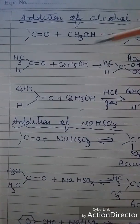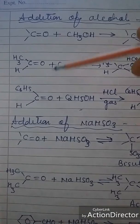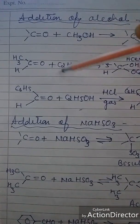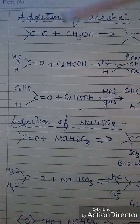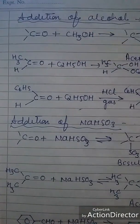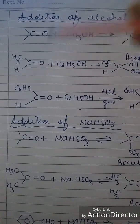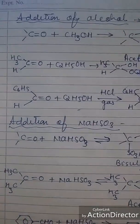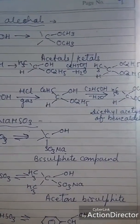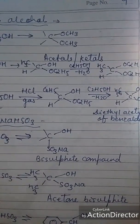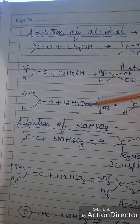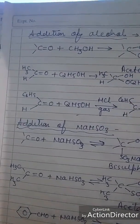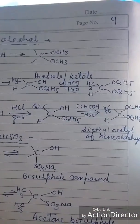Let us see the addition of alcohol. When alcohol is added to acetone, the OC2H5 group attaches to the carbon and H attaches to oxygen, giving a hemiketal. Further treatment gives the diethyl ketal derivative. Similarly, when benzaldehyde is treated with ethanol in the presence of HCl, you get the diethyl acetal of benzaldehyde.